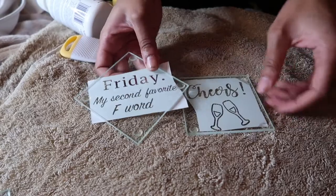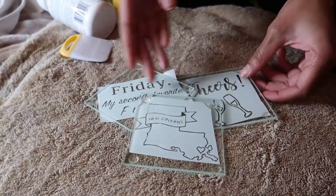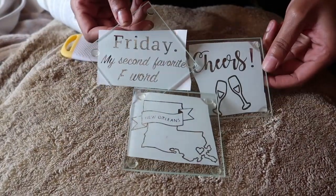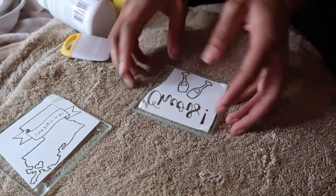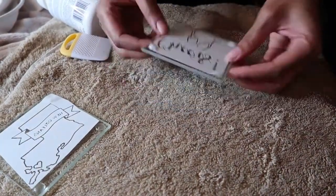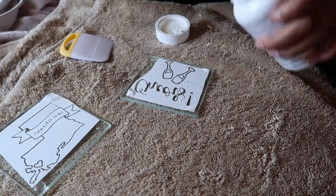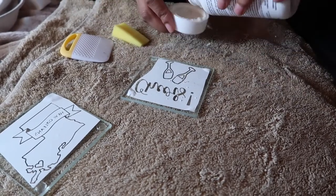Your coasters should look like this. Next you want to take one and flip it upside down to wherever you put your sticker at. You want to take your sponge. I'm actually going to put some in a cap.